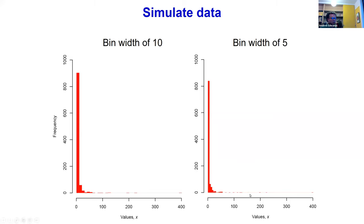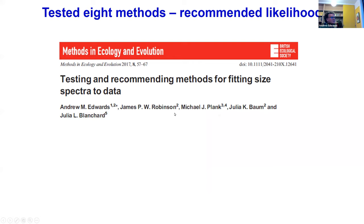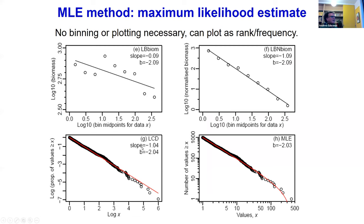The take-home message from the first paper is that we recommended the likelihood method. We tested different methods: binning the data by biomass, normalized biomass, rank frequency plots with straight-line fits, and the likelihood method. I like the rank frequency (or cumulative) plot — the x-axis has values from 1 to the maximum, and the y-axis is the number of values bigger than or equal to each x-axis value. Every point is a different individual. Because it's a power law with log-log axes, you get a fairly straight line, and the red line is the fitted distribution using likelihood.